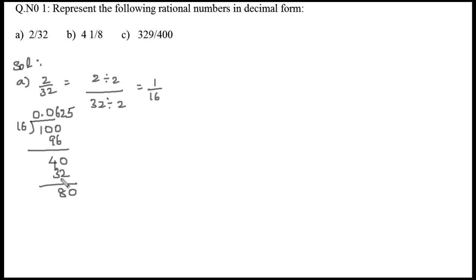Taking down 0 makes 80. 16 goes into 80 five times, so the remainder becomes zero. Therefore, the decimal representation of 2/32 is 0.0625.